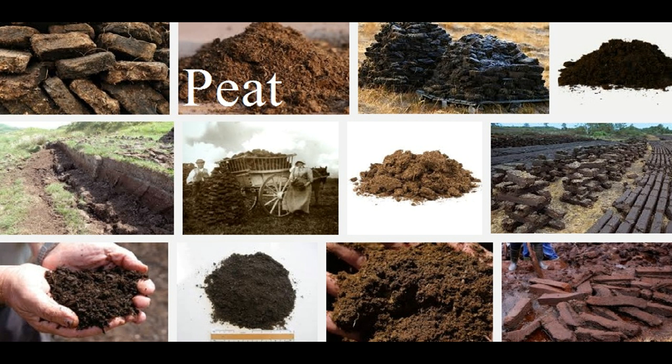Peatlands, also known as mires, particularly bogs, are the most important source of peat, but other less common wetland types also deposit peat, including fens, pocosins, and peat swamp forests. Other words for lands dominated by peat include moors or muskegs.